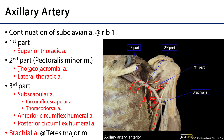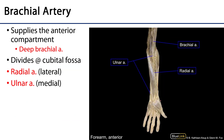At the inferior margin of teres major, the axillary artery becomes the brachial artery. We can see the continuity of the brachial artery descending down the anterior compartment of the arm, as well as the deep brachial artery going to the posterior compartment of the arm. The brachial artery runs down the anterior aspect of the arm and gives off the deep brachial artery, which supplies the posterior compartment.